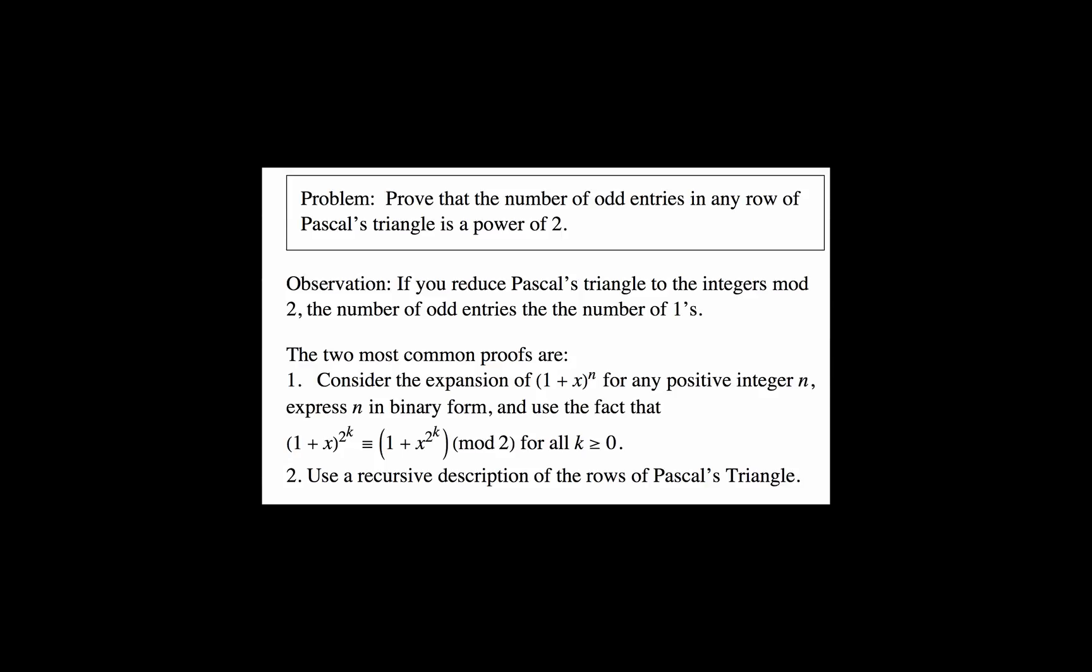I'd like to prove a property of the rows of Pascal's triangle. Specifically, I want to prove that the number of odd entries in any row of Pascal's triangle is a power of 2.